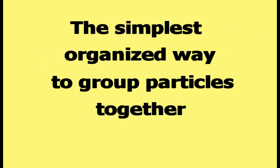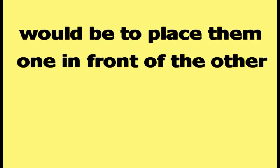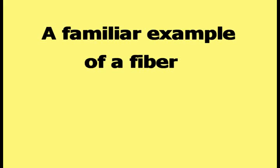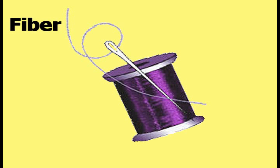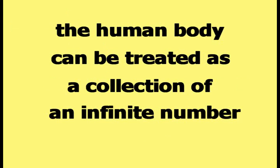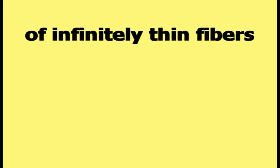The simplest organized way to group particles together would be to place them one in front of the other, as shown in this picture. The object that is formed by connecting single particles together in this fashion can be called a fiber. A familiar example of a fiber would be the thread used for sewing clothes. According to the fiber view of the human body, the human body can be treated as a collection of an infinite number of infinitely thin fibers.